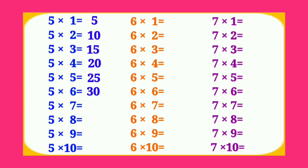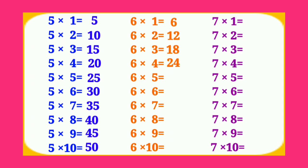5 7's are 35, 5 8's are 40, 5 9's are 45, 5 10's are 50. Table of 6. 6 1's are 6, 6 2's are 12, 6 3's are 18, 6 4's are 24.